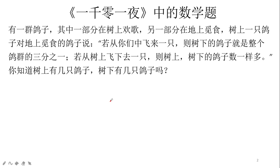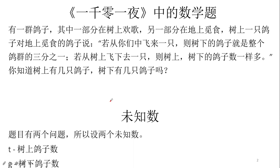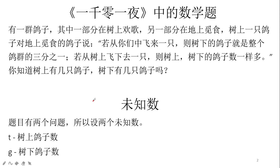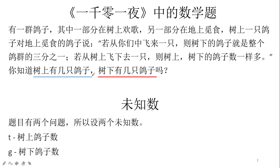这是一千零一夜当中的一个数学问题，我们来看怎么列取这个应用题的方程组。这个题目里头它有两个问题：一个问题是树上有几只鸽子，再一个问题是树下有几只鸽子。这个题目说有一群鸽子，其中有一部分在树上，有一部分在地上。